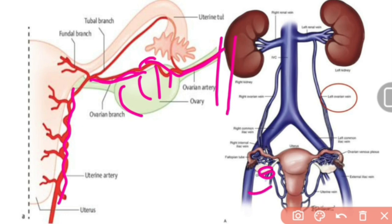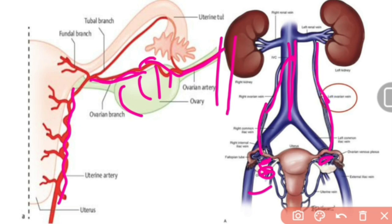The veins collect blood forming a pampiniform plexus around the ovarian artery. This pampiniform plexus gives rise to a single ovarian vein. The right ovarian vein drains directly into the inferior vena cava, and the left ovarian vein drains into the left renal vein and then into the inferior vena cava.